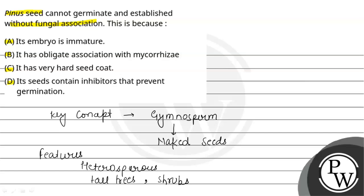One of the tallest species is Sequoia, which is an example of gymnosperms. Sequoia is a redwood tree and is one example of a gymnosperm.